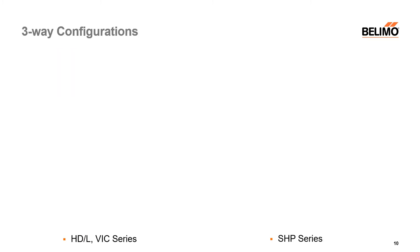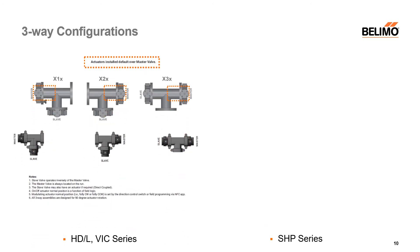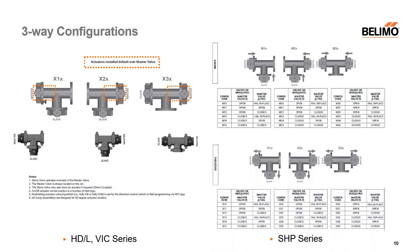We sell three-way butterfly valves that must be ordered in a specific configuration. Essentially we're taking two two-way valves and mounting them to a T. You would need to specify the configuration — X10, X20, or X30 — based on how you want the valves made. The HD and L series can be used for mixing or diverting. The high-performance series is flow-specific because it's a higher-pressure valve and must be made either for mixing or diverting. If ordered incorrectly, you can change them in the field, though it is a bit time-consuming.